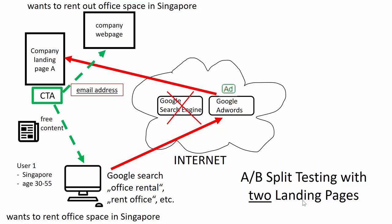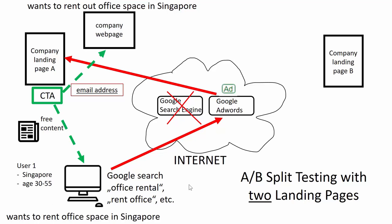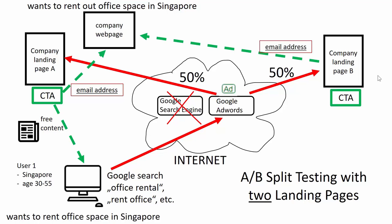Now let's look at how we do A-B split testing with two landing pages. We have the same setup as before: our company wants to rent out office space in Singapore and the user wants to rent office space in Singapore. What we do is set up a second landing page with a second call to action. We program our Google AdWords such that 50% of requests are directed to company landing page A and 50% to company landing page B. The users for both landing pages give us their email addresses and we provide some free content. The email addresses are later used to engage with the potential customer to find out what they need and whether we can help them. This is the basic principle of A-B split testing done with two landing pages and Google AdWords.